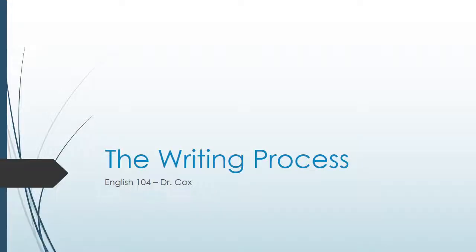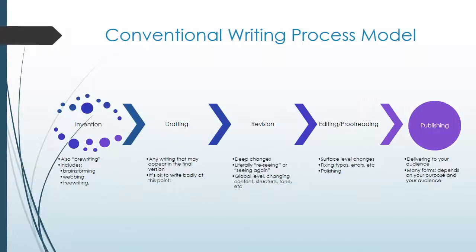In this video we're going to talk about the writing process. We're going to look at some models and some different processes that people use. This is the most common conventional model of the writing process, and you'll notice that it's fairly linear — you've probably seen something like this before, maybe in a different illustration or with different words, but it will probably seem familiar.